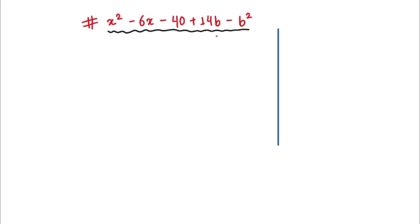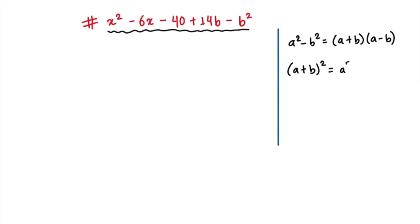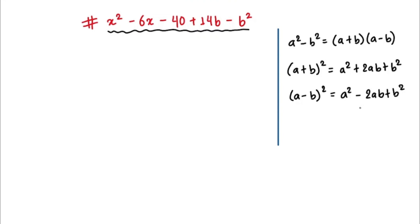We talked about how we can factorize this type of algebraic expression by using the formula a squared minus b squared, which equals (a plus b)(a minus b). We also need to know some other formulas: (a plus b) squared equals a squared plus 2ab plus b squared, and (a minus b) squared equals a squared minus 2ab plus b squared.